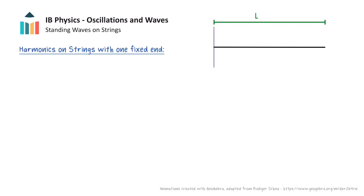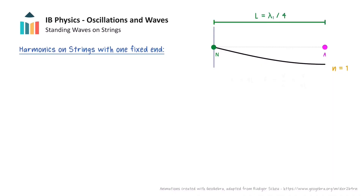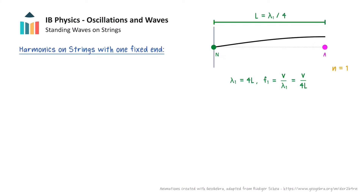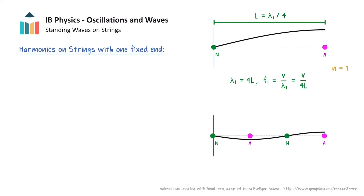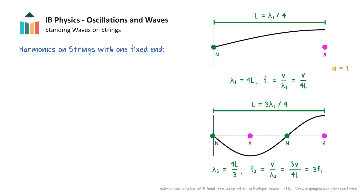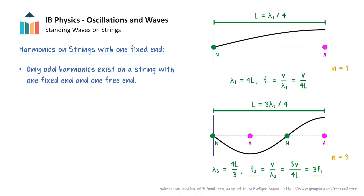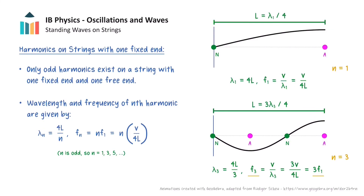So what happens when the string has one of its ends fixed and the other end is free? In this case, the boundary conditions will be a node at the fixed end and an antinode at the free end. This animation shows the first harmonic, where one quarter of a wavelength fits along the string, so the wavelength and frequency of the first harmonic are given by the following expressions. The next harmonic has two nodes and two antinodes, with three quarters of a wavelength fitting along the string. When we calculate the corresponding frequency, notice how this is three times the frequency of the first harmonic, so this wave actually corresponds to the third harmonic. In particular, only odd harmonics of standing waves can exist on a string that is fixed at one end, where n has to be an odd integer greater than zero.